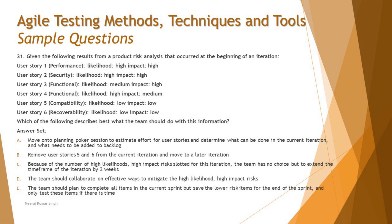Option E says: the team should plan to complete all items in the current sprint but save the lower risk items for the end and only test these items if there is time. No — sprint planning is about determining the number of items you can actually complete, not about doing things only if time permits. A planning poker session should be held first. If there's not enough time, items move to the next sprint — not arbitrarily deferred based on risk level alone.